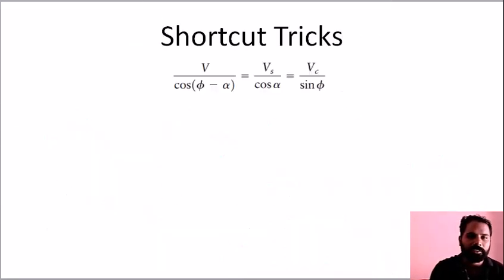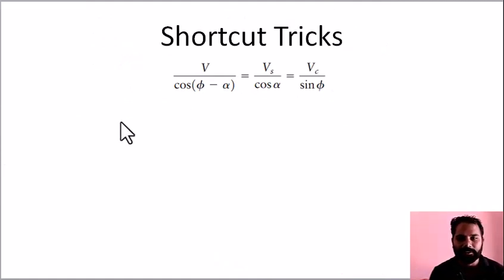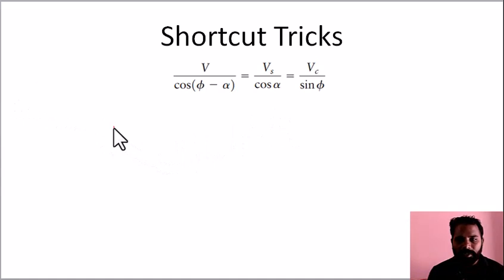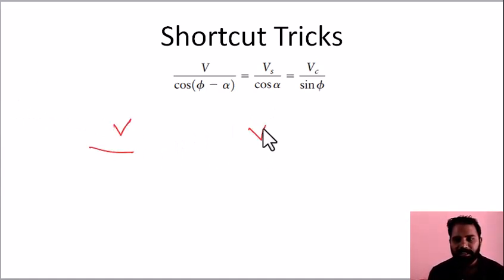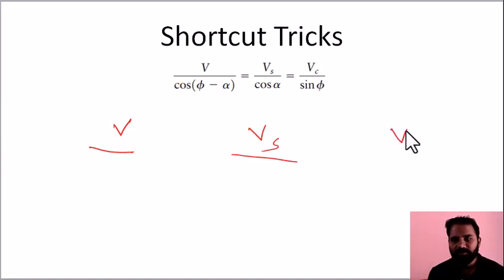Let's take a shortcut approach. The three velocities are: cutting velocity V, shear velocity Vs, and chip flow velocity Vc. Remember the subscripts: S for shear, C for chip, and no subscript for cutting velocity.